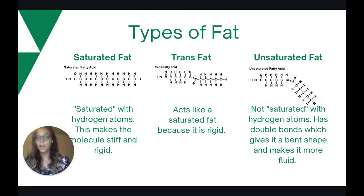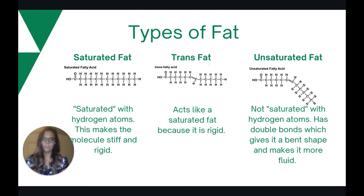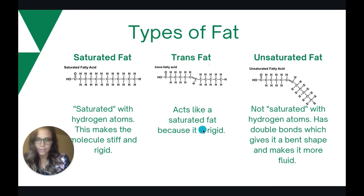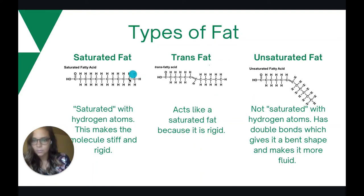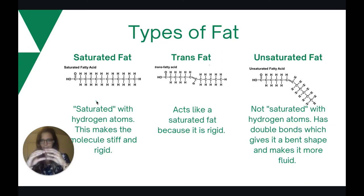So let's talk about those types of fat. We can classify fat based on saturation. If you look at what a fat is made out of, it's a chain of carbon molecules, and when a fat is saturated, that means there is a hydrogen atom on every free available space, and because of that it makes a stiff, rigid molecule. Trans fat also acts like a saturated fat — while there might not be a hydrogen in every space, it's still pretty straight and stiff and rigid.